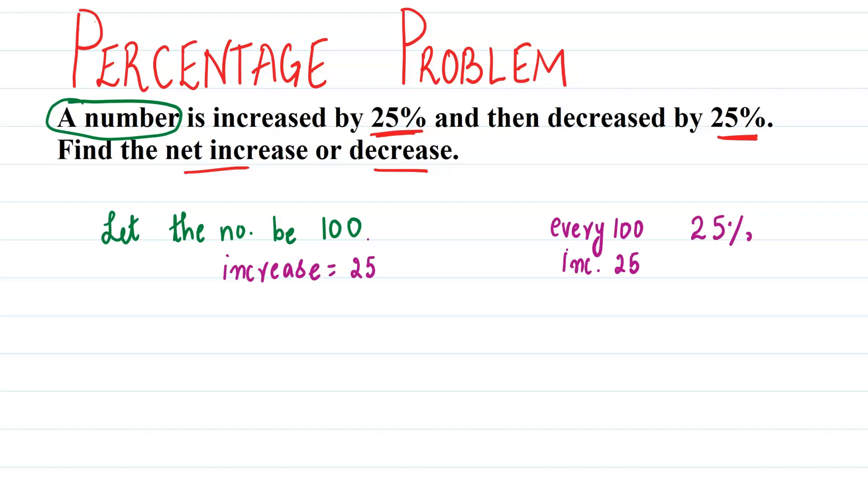So what will be the new number? The new number will be 100 plus 25, that is 125. Now they are saying, and then decrease it by 25 percent. Now first we are increasing by 25 percent, then whatever number we are getting, we are decreasing it by 25 percent.